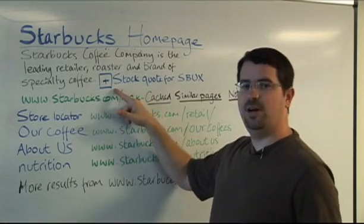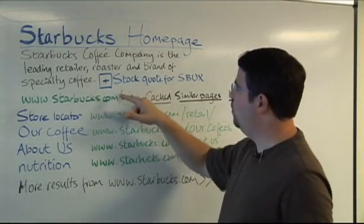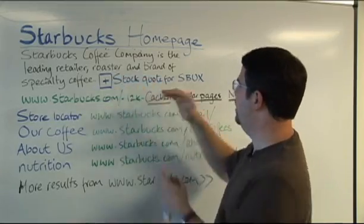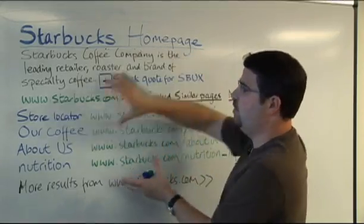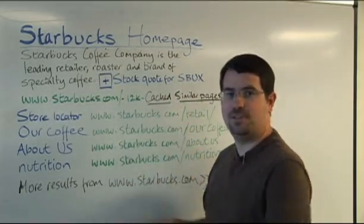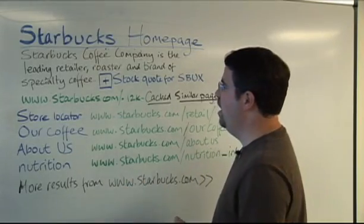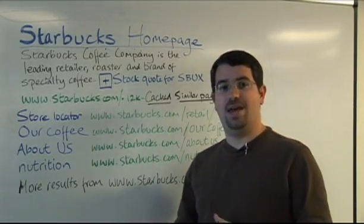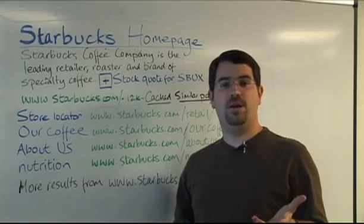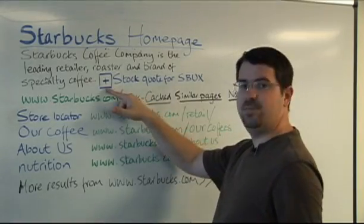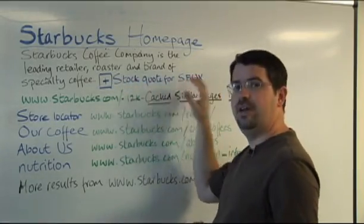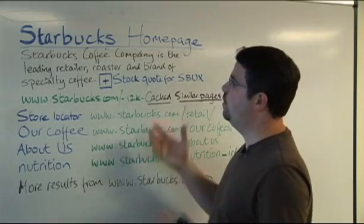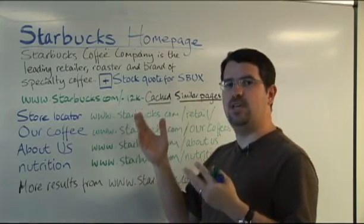Starbucks is also a company, so we show a little thing we call a plus box — if you want, you can click and expand and you'll get a stock chart for Starbucks so you can see whether they've been doing well in the market. There are a lot of these different options. For example, if you have an address on your page, many times we'll show a plus box that says 'view a map of' and then show your address. We're always looking for new ways to surface interesting data.